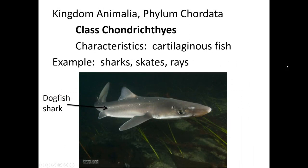Next is class Chondrichthyes — 'ichthys' means fish (as in ichthyologist, a person who studies fish) and 'chondro' means cartilage, so this means cartilaginous fish. Sharks have a cartilage skeleton, though the jaw becomes more bony because of the force exerted on it. These fish have a lateral line that helps them sense wave movements and detect where prey might be splashing around.